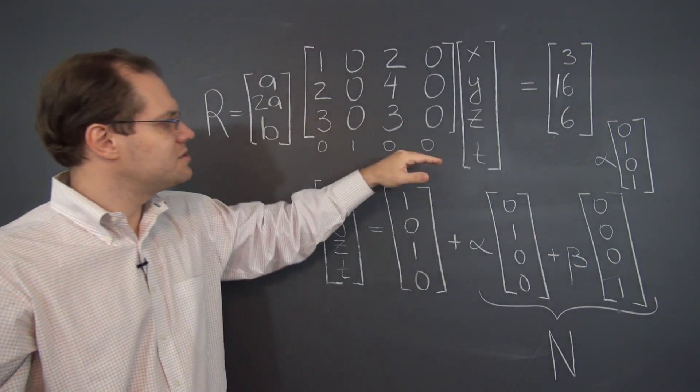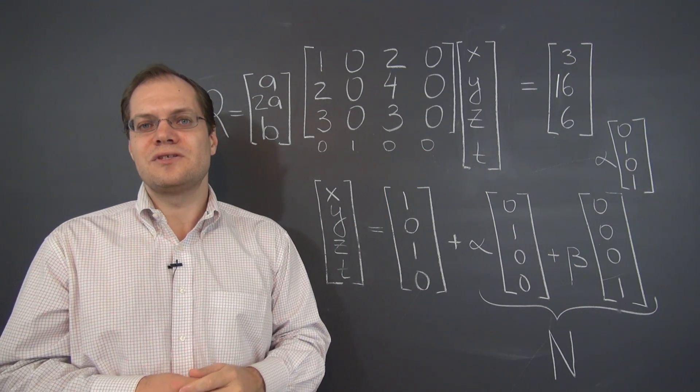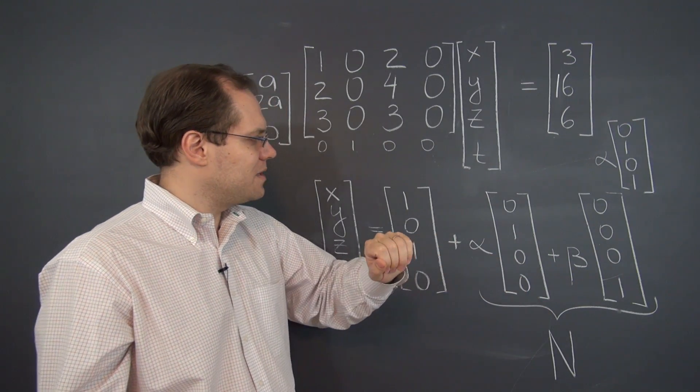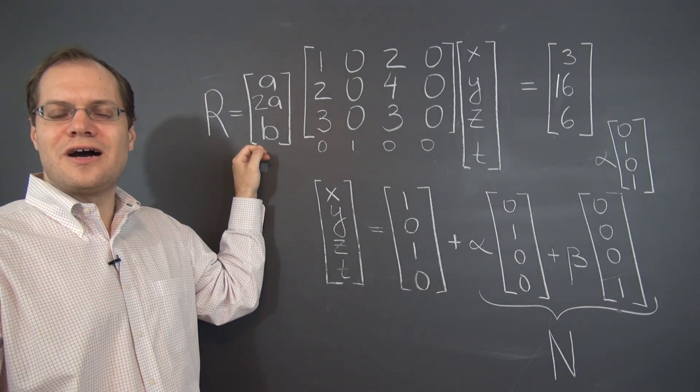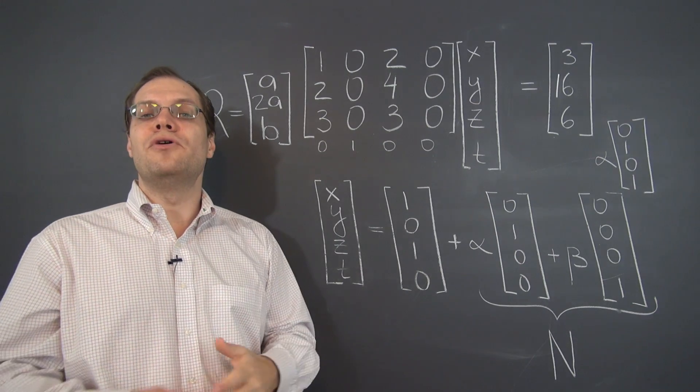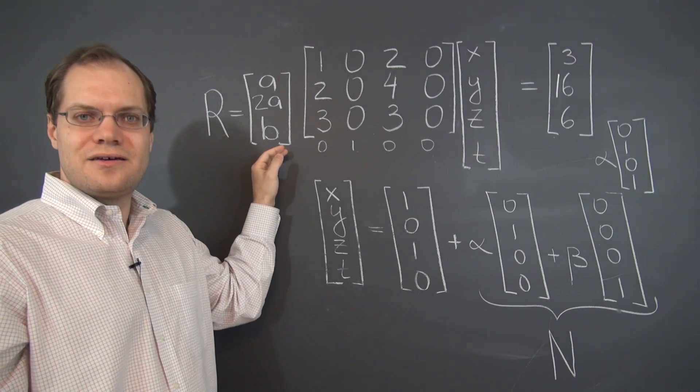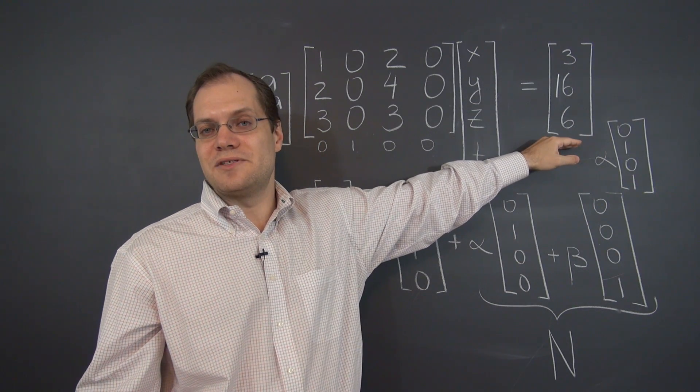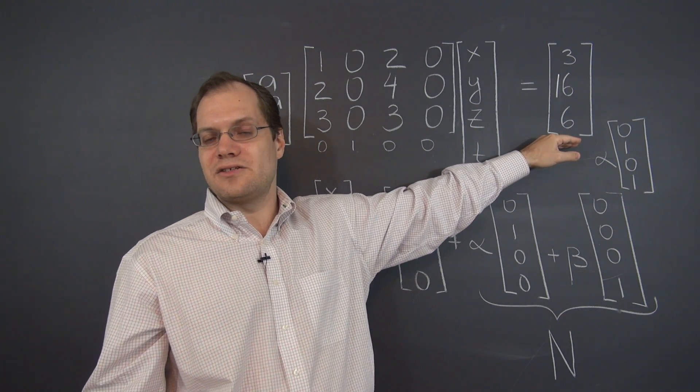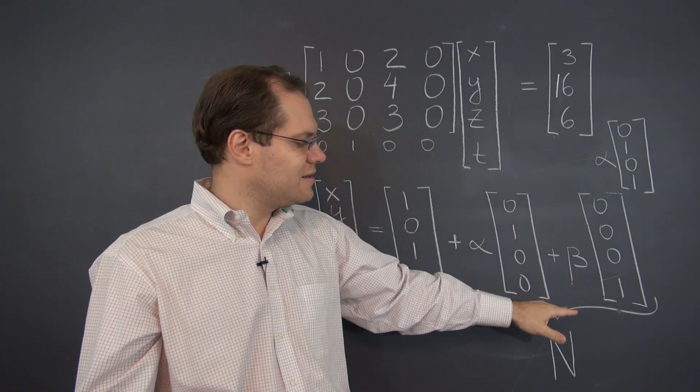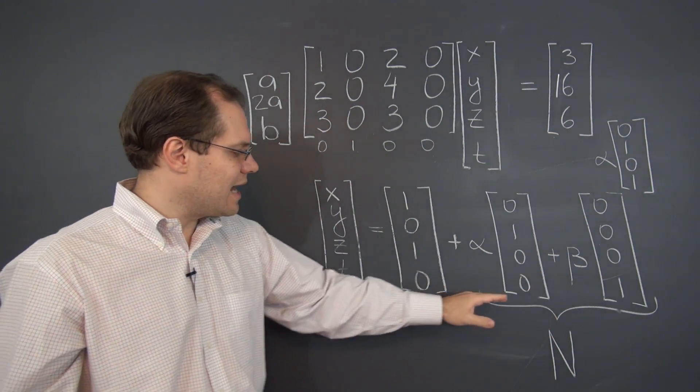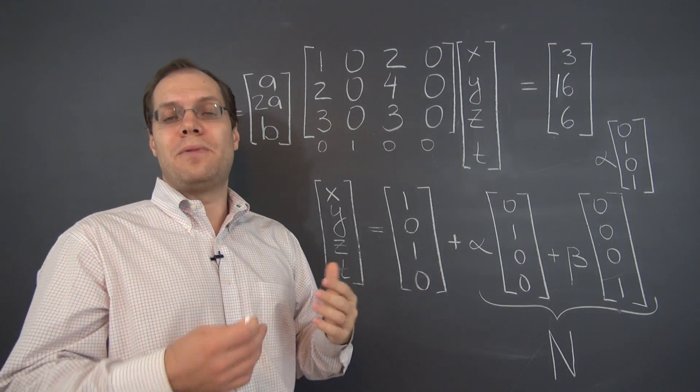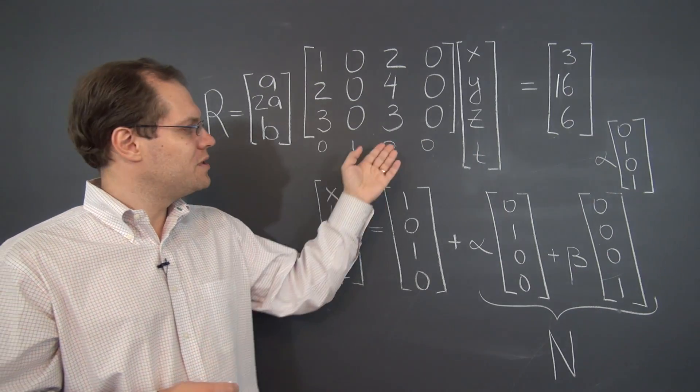So there you go. Just another example of the value of the null space and the value of the column space. As always, both are very important. The column space you need to know in order to determine whether the right-hand side is in the column space, and therefore whether the system has a solution at all. And the null space you need to know because it is added to any particular solution and helps us capture all possible solutions of the problem when the columns are linearly dependent.